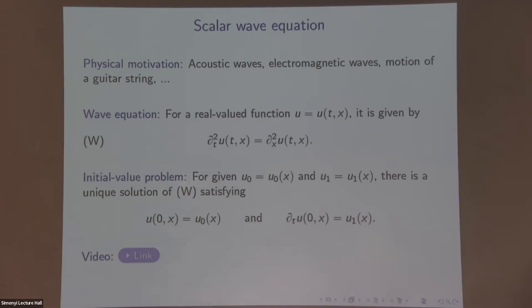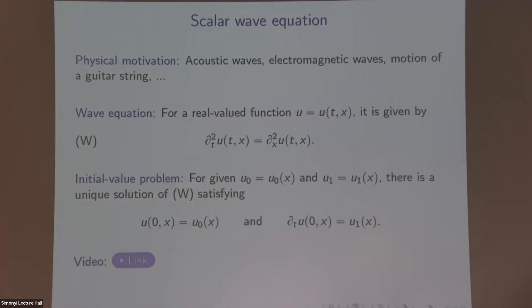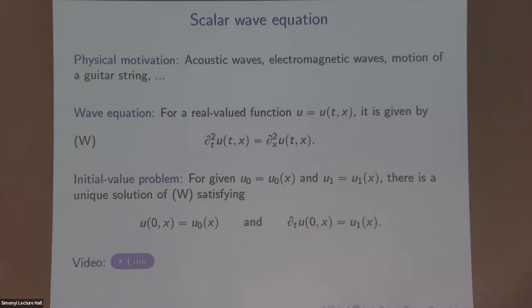So what is this scalar wave equation? Let's consider a real-valued function u that depends on time and space. So time is denoted by t, space by x, and both these are one-dimensional things. And the PDE for this wave equation is given by the following equation right here. I want that the second derivative in time is given by the second derivative in space. These things are supposed to be equal. So, of course, there's not just one solution to this equation. There are many possible ones.